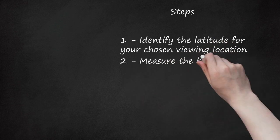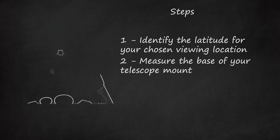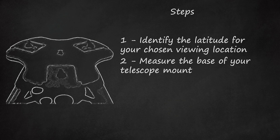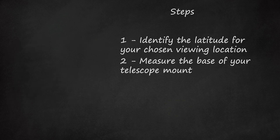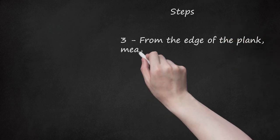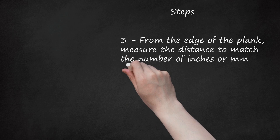Step 2: Measure the base of your telescope mount. You will need to measure the length and width of the mount. Assuming that you already made sure your plank of wood is at least 4 inches wider than the mount, add 4 inches to the length of the mount at the base. Step 3: From the edge of the plank, measure the distance to match the number of inches or mm calculated in step 2.